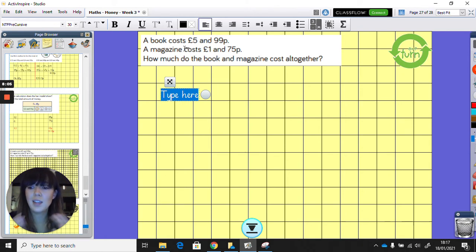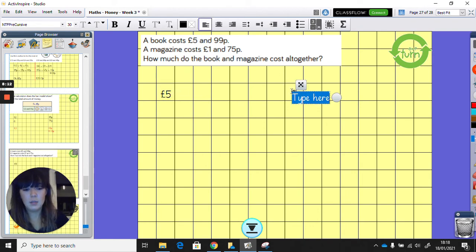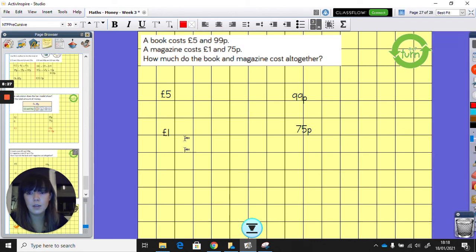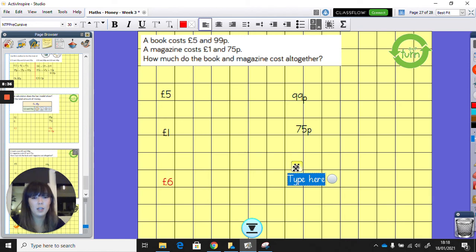So £5.99, £5 there, 99p there, £1 there, and 75p there. So we're going to add the £5 and the £1 first. That's easy. £5 add £1 is £6. And then we're going to do 99p add to 75p. Now, this is a trick. 99p is very, very, very close to 100p, isn't it? It's actually just one less.